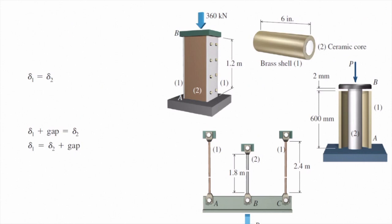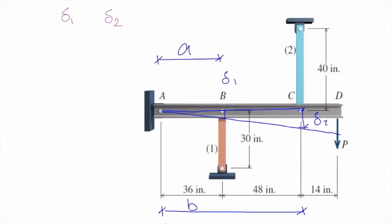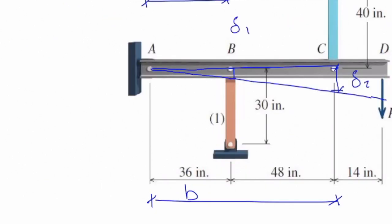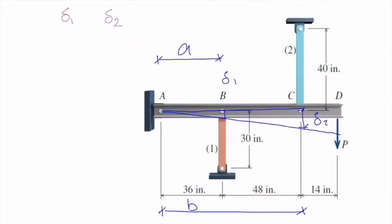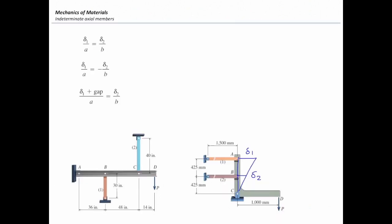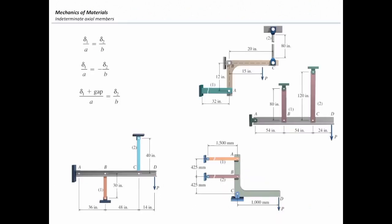In category three, when a rigid beam like ABCD connects elements at different points, we use similar triangles to establish the compatibility condition. For example: delta one divided by the distance from A to B (say 6 inches) equals delta two divided by the distance from A to C (say 84 inches). Similarly, delta one divided by 950 mm equals delta two divided by 425 mm in another case. In all these figures, we use the similar triangle principle.